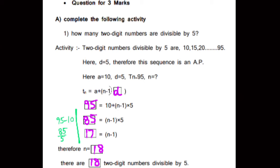The multiples of 5 — numbers divisible by 5 — that are two-digit numbers will be 10, 15, 20, etc., up to 95. Even 100 is a multiple of 5, but 100 has 3 digits, so you should not take 100. Starting from 10 to 95: 10, 15, 20, etc., 95. Two-digit numbers divisible by 5 are 10, 15, 20, etc., 95. I am explaining all these lines because these questions may also be asked as 3-mark questions.